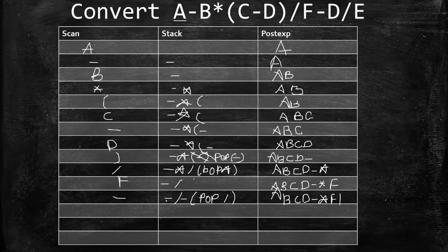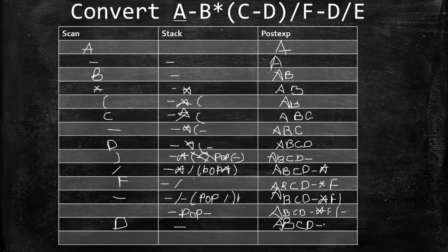Two minus operators on stack have equal priority, so pop again. Pop minus and push to PostExp. PostExp: A B C D minus * F slash minus. Stack now has one minus. Scan D — operand, push to PostExp. PostExp: A B C D minus * F slash minus D.